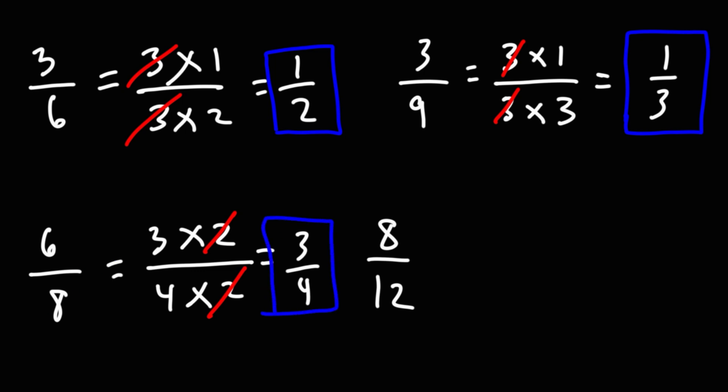Now what about 8 over 12? How can we simplify that? 8, we can break that down into 4 times 2, and 12 is 4 times 3.